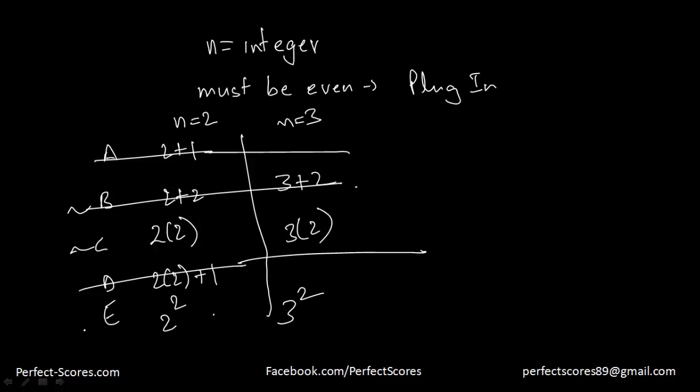And 3 square is not even, that means this is also eliminated. Hence my answer is option C. So I hope you've understood this one, guys. Thank you very much and I'll see you in the next video.